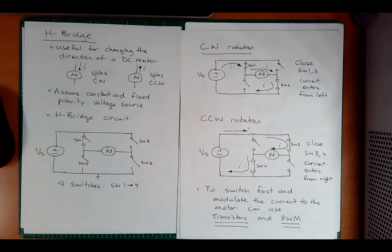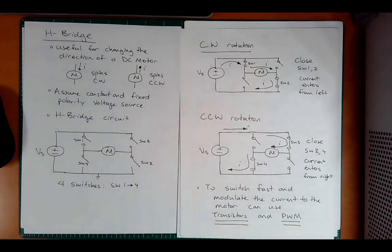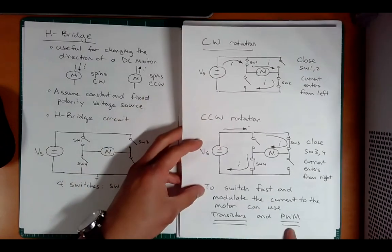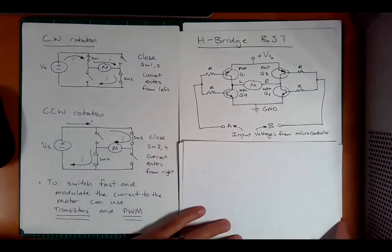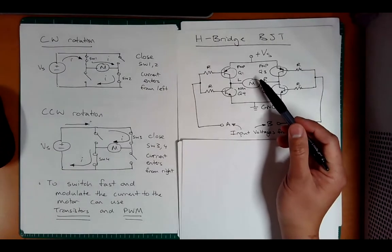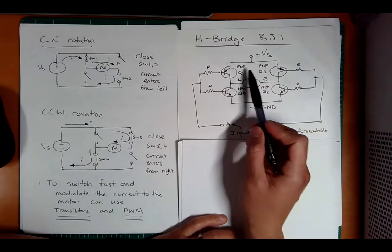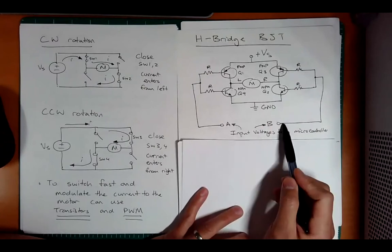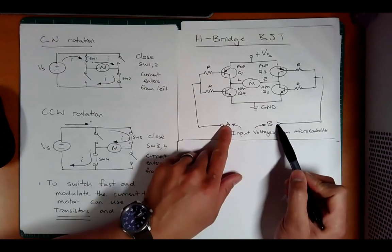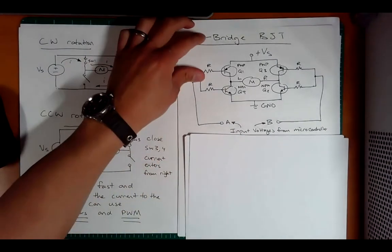Let's say that's clockwise rotation. If I wanted to get the current to go the other way from right to left, I could open up switch one and two and close switch three and four. Closing switch three and four takes that same polarity of voltage and directs it from the right to the left this time. The current direction in the motor changed, however the voltage source polarity is the same. How would we do this without mechanical switches? We can use the transistor.